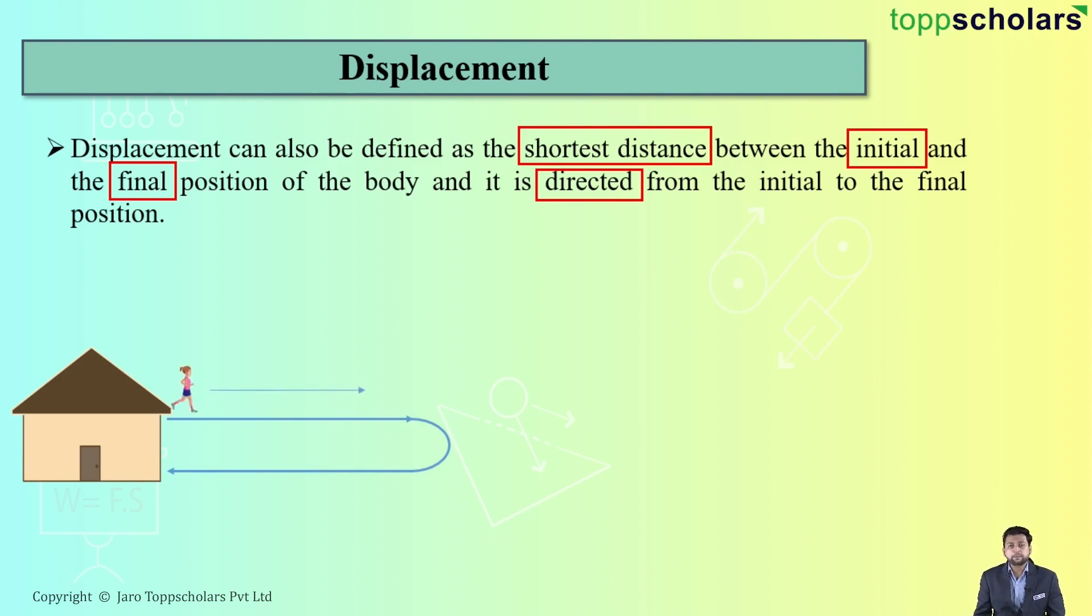Again we will imagine a person is walking from his home to a certain point and suppose that person covers a distance of 5 kilometers. Now suppose if the person wants to come back to his home again, the distance traveled will be 5 kilometers.